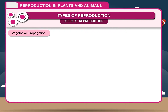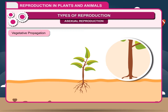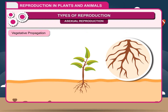Vegetative Propagation. It is the growing of new plants from the vegetative parts of a plant, like leaf, stem or root of a single parent. In vegetative reproduction, sex organs do not take part. Hence, seeds are not produced.